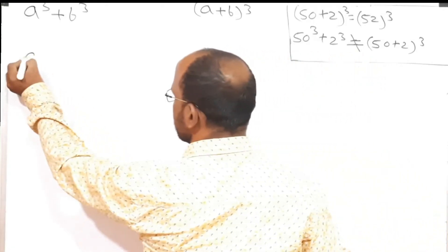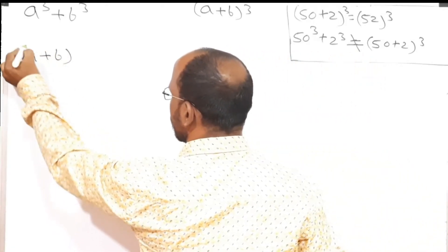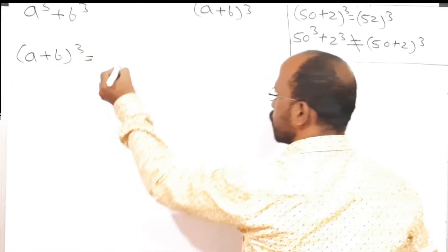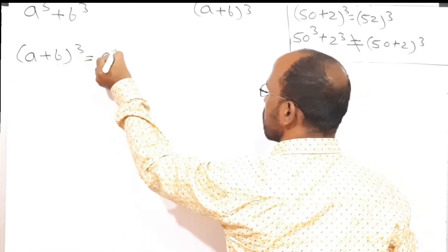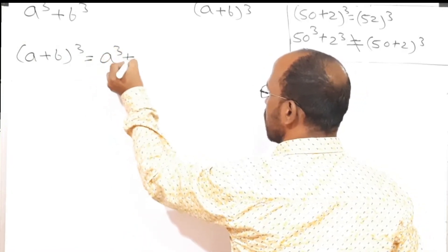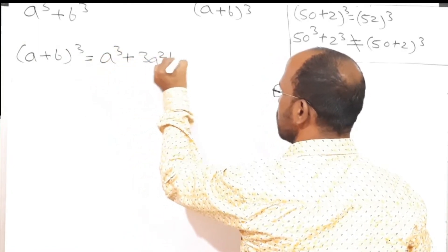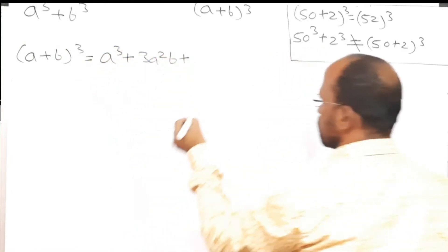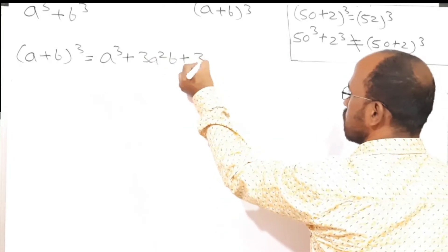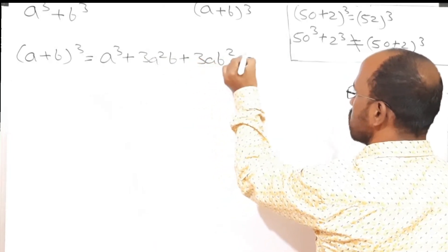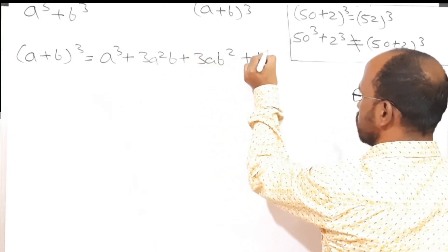A plus b bracket cube is nothing but a cube plus 3a squared b plus 3ab squared plus b cube.